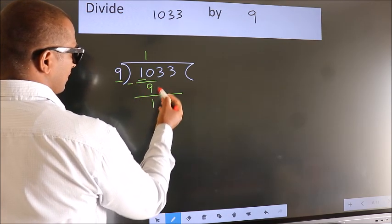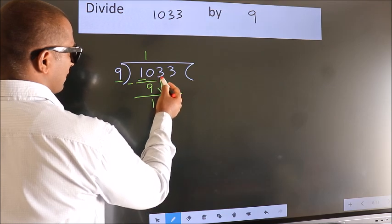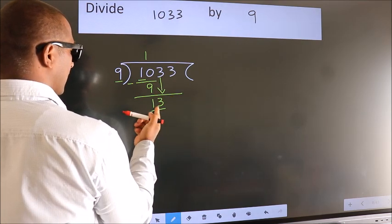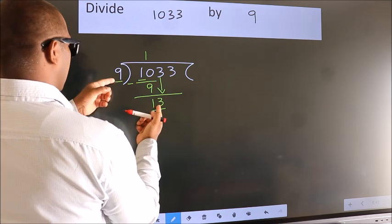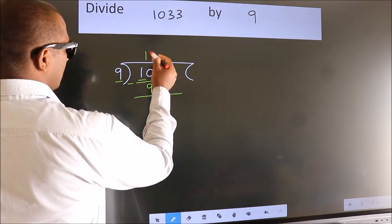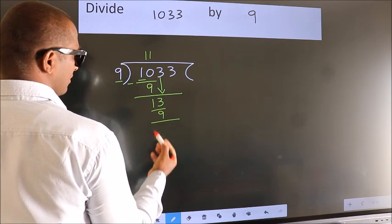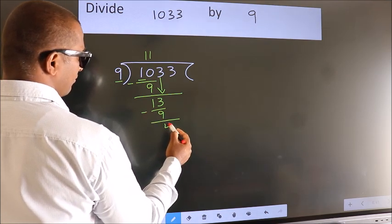After this, bring down the beside number. So 3 down. So 13. A number close to 13 in 9 table is 9 ones, 9. Now we subtract. We get 4.